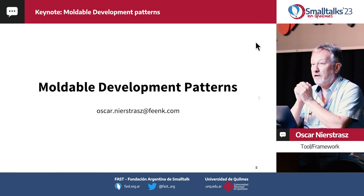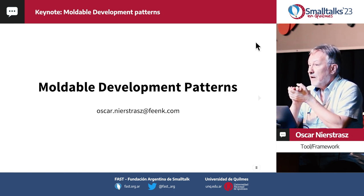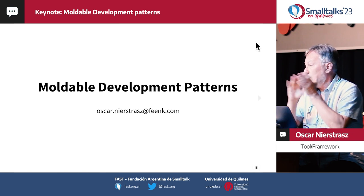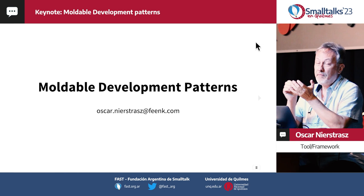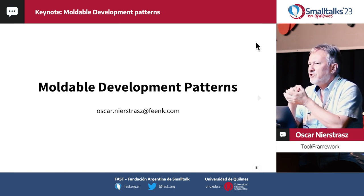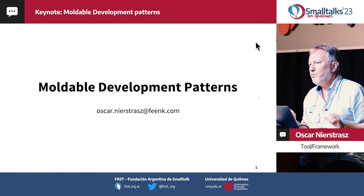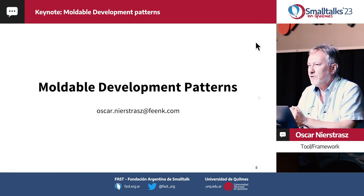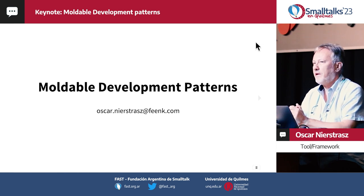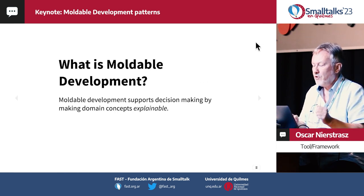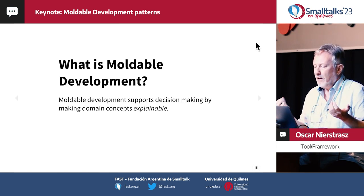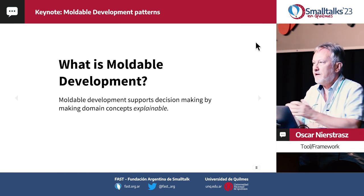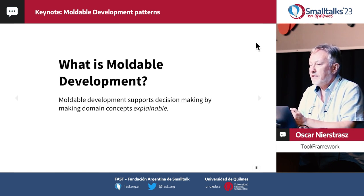Moldable development is all about developing your software and systems so that they are explainable, so that you can understand them — you can talk to the systems, ask questions and get answers back. We've also realized over the years that we can explain moldable development in terms of a bunch of design patterns. Today I'll give you a very brief introduction to moldable development with a couple of examples, using Glamorous Toolkit. It's really about supporting decision making, helping you understand software systems by making concepts explainable.